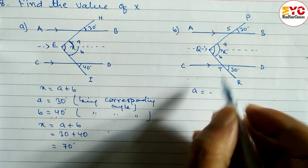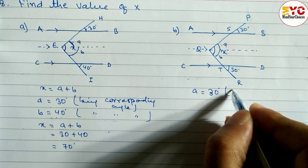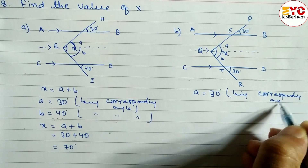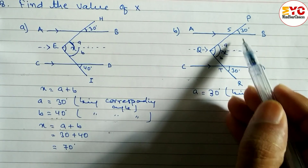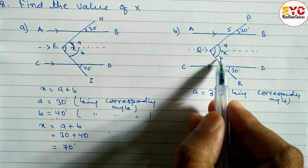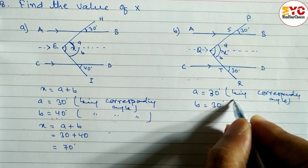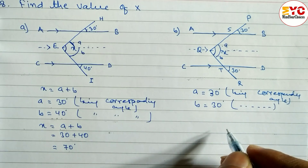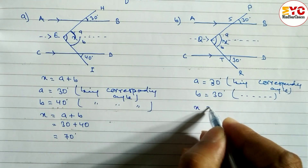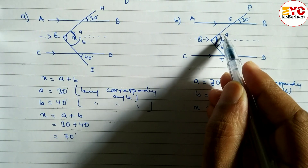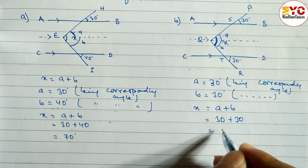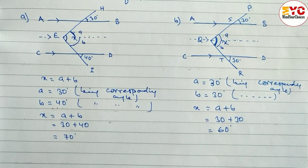Let's find out value of A. A is equal to 30 degrees. Reason: being corresponding angle, because one is inside and another one is outside of the parallel lines. Similarly, B is also the same — B is equal to 30 degrees. Reason: being corresponding angle. After that, x is equal to A plus B. A is equal to 30 and B is also 30. When you add, we get 60 degrees. So value of x is equal to 60 degrees.